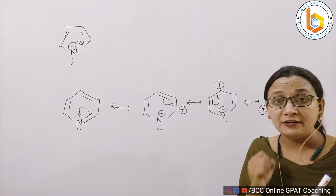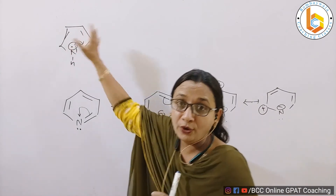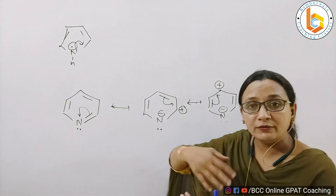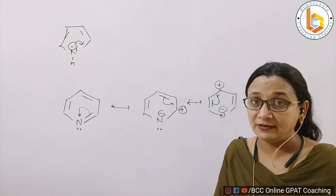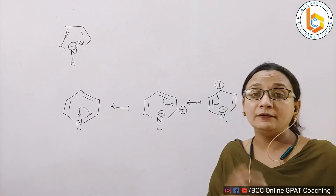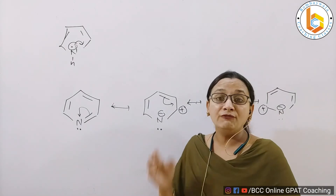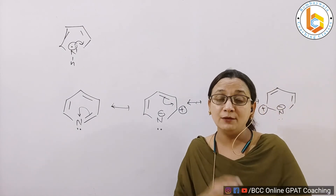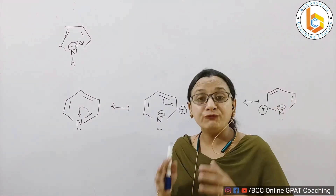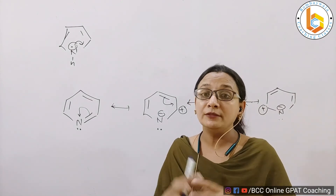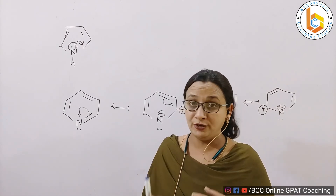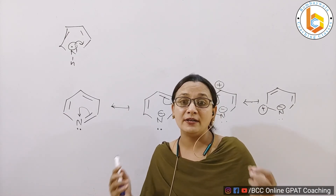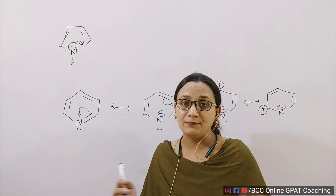The important thing to remember is: in pyrrole, the lone pair of electrons will move; in pyridine, do not touch them. Let it be there outside the ring, and whatever is moving are the pair of electrons that are inside the ring. This concept — that the pair of electrons are lying outside the ring — will explain all the reactivities. In my next video, we will be talking about the basicity of pyridine, and also electrophilic aromatic substitution and nucleophilic aromatic substitution. Keep watching and don't forget to subscribe to this channel. Thank you.